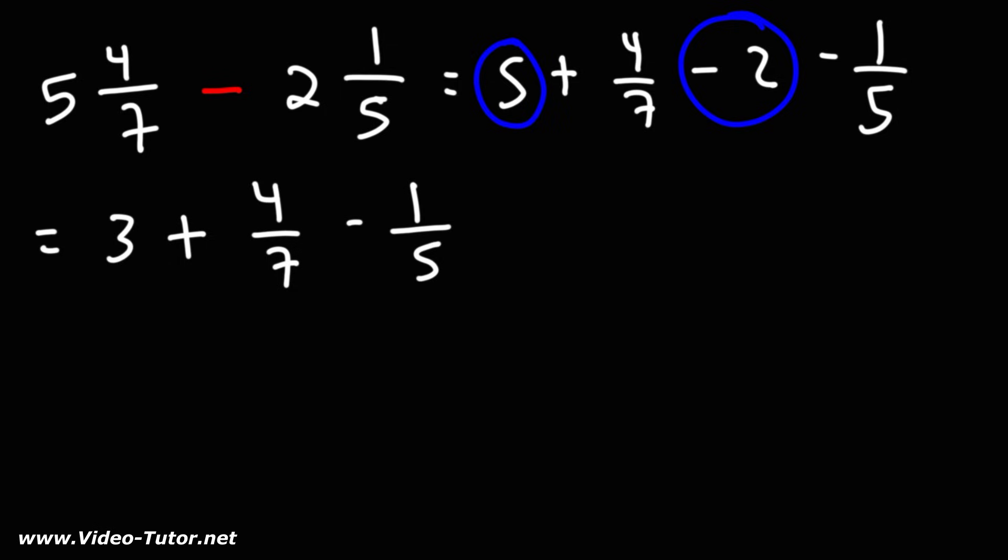To subtract these two fractions, we need to get common denominators. Let's multiply the second fraction using the denominator of the first, and the first fraction using the denominator of the second. 5 times 4 is 20, 5 times 7 is 35, 1 times 7 is 7, 7 times 5 is 35.